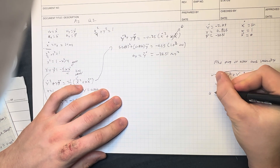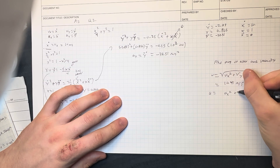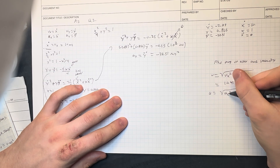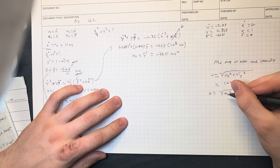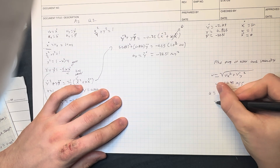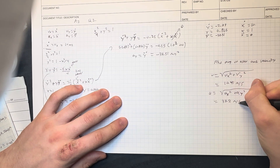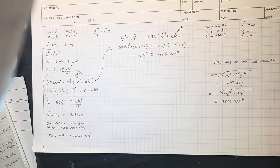The magnitude of acceleration equals the square root of ax² plus ay², which equals 38.51 meters per second squared. That is the end of the question.